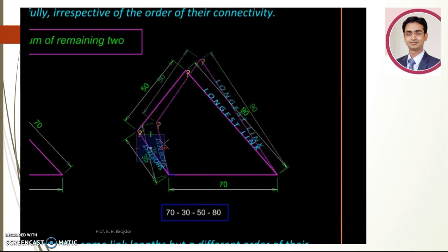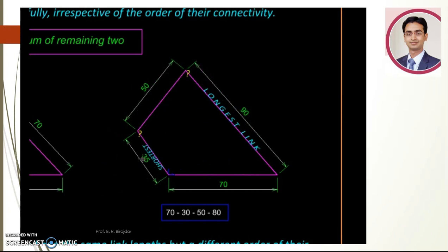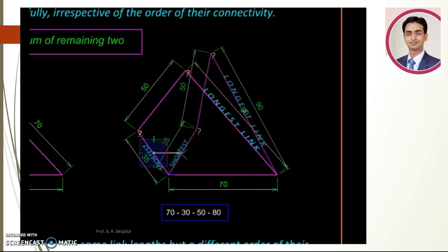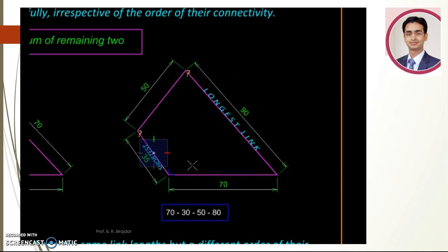Now here we are not getting a crank. Why could that be? Let's see. 35 and 90 add up to 125, while 50 plus 70 is only 120. So Grashof's criteria is violated, and the mechanism gets locked in this position or that position.